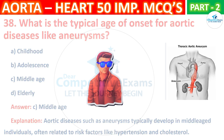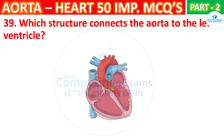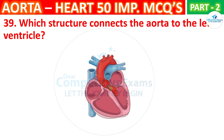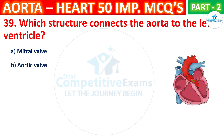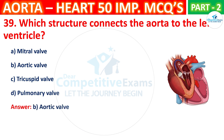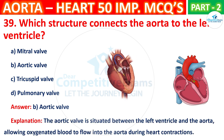Question No. 39. Which structure connects the aorta to the left ventricle? Your options are: Mitral valve, Aortic valve, Tricuspid valve, or Pulmonary valve. The correct answer is B, that is aortic valve. The aortic valve is situated between the left ventricle and the aorta, allowing oxygenated blood to flow into the aorta during heart contractions.